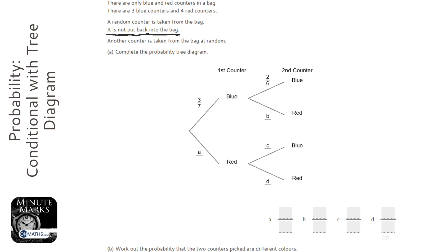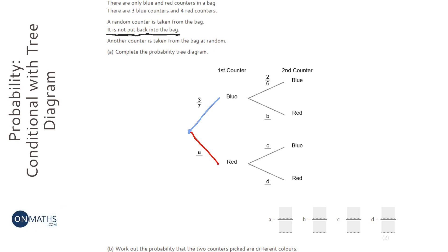The way probability trees work is you start on the left-hand side and you have an option: you can either go up if you pick blue, or down if you pick red. Because you have to pick one of the options, the two probabilities have to add up to one. So if blue is three over seven, the bottom one must be four over seven, because then it adds up to seven over seven, which is one.